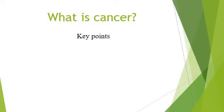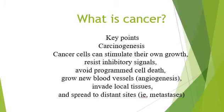They also resist the apoptosis process. Furthermore, if they invade the nearby blood vessels, they may invade local tissues, and they can also spread from their original site to distant sites via blood or lymphatic vessels. They undergo a carcinogenesis process, which is a multi-step process. By this process, cancer cells can stimulate their own growth, avoid programmed cell death, and can grow new blood vessels within themselves.